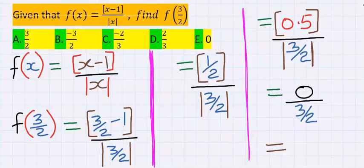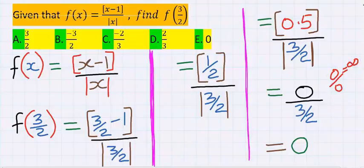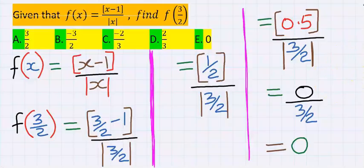In mathematics, 0 at the numerator neutralizes everything at the denominator to 0, except when the denominator is also 0 — because 0 divided by 0 is undefined and does not exist. But 0 at the numerator with a non-zero denominator is allowed. Hence, the result is 0. And from the options, your answer is E.